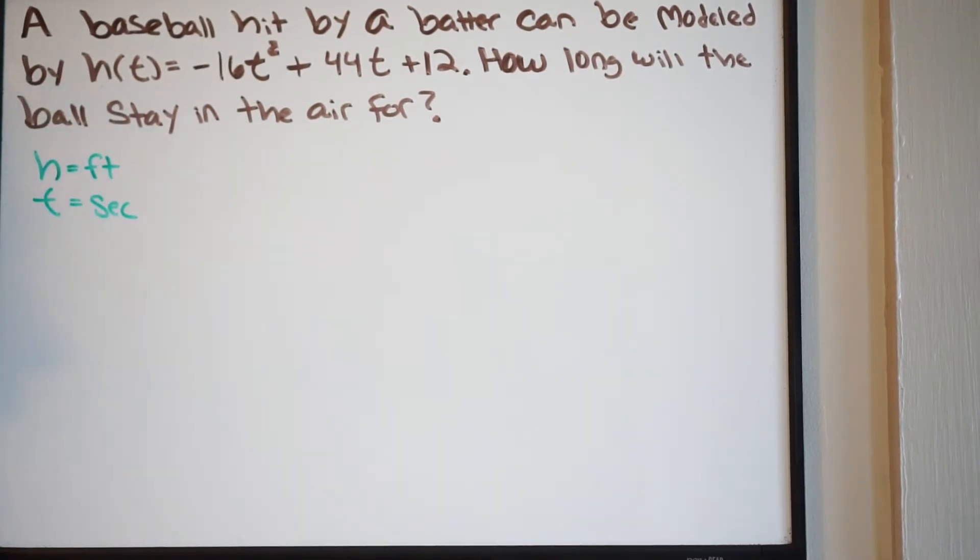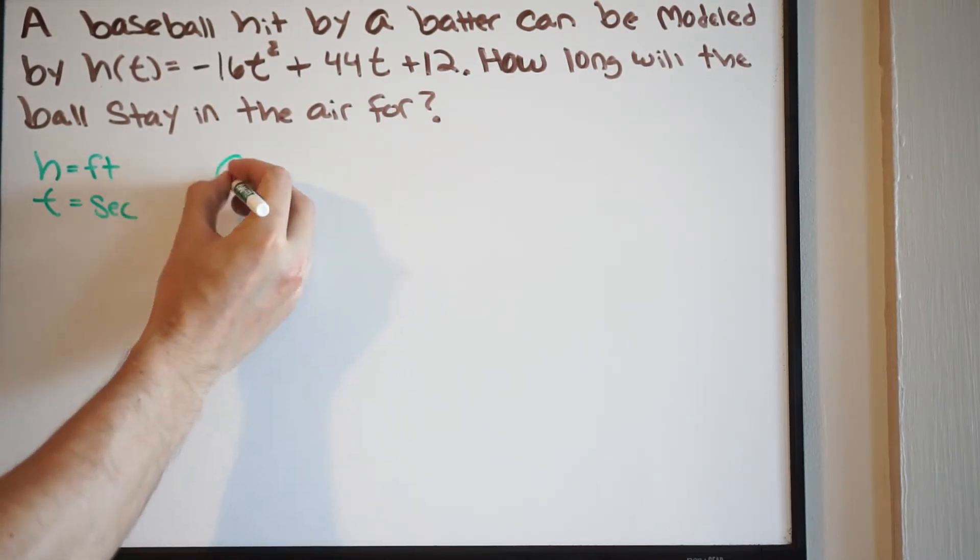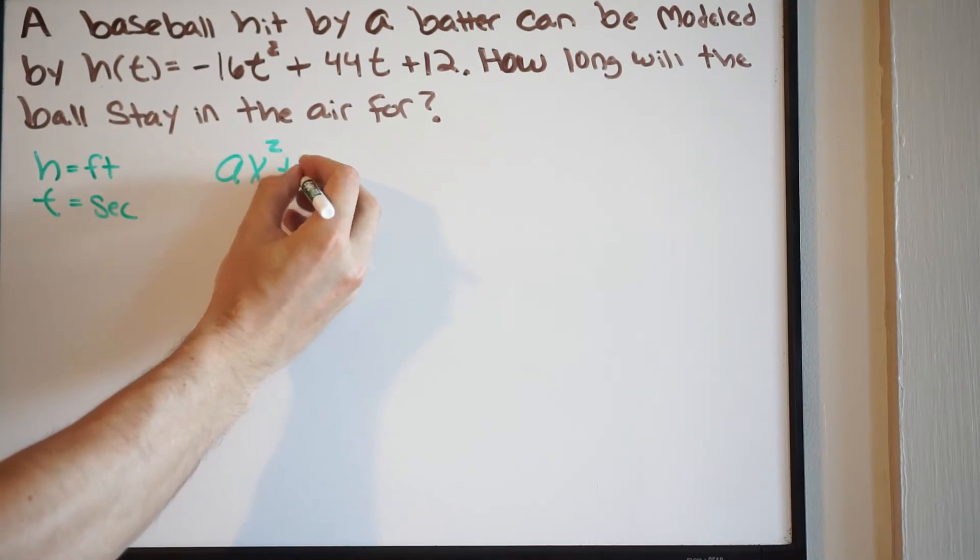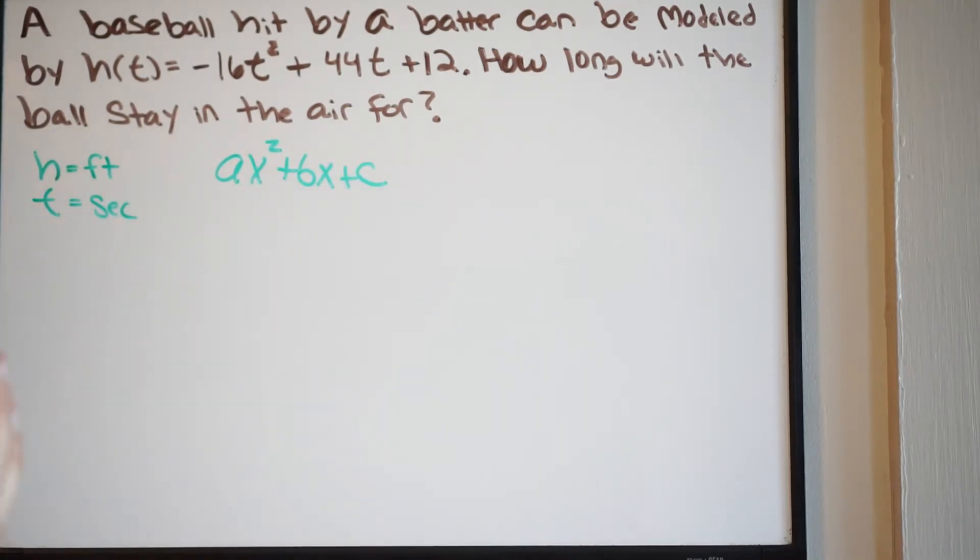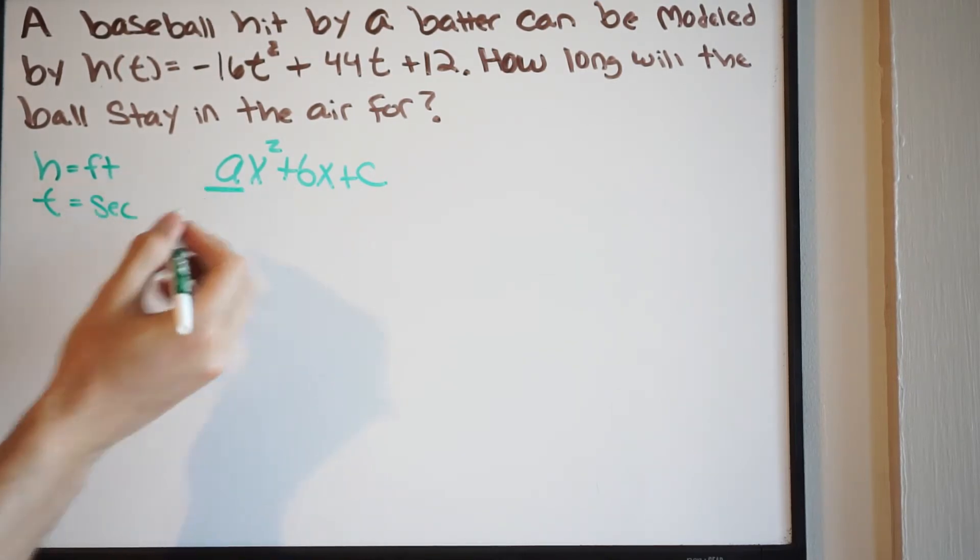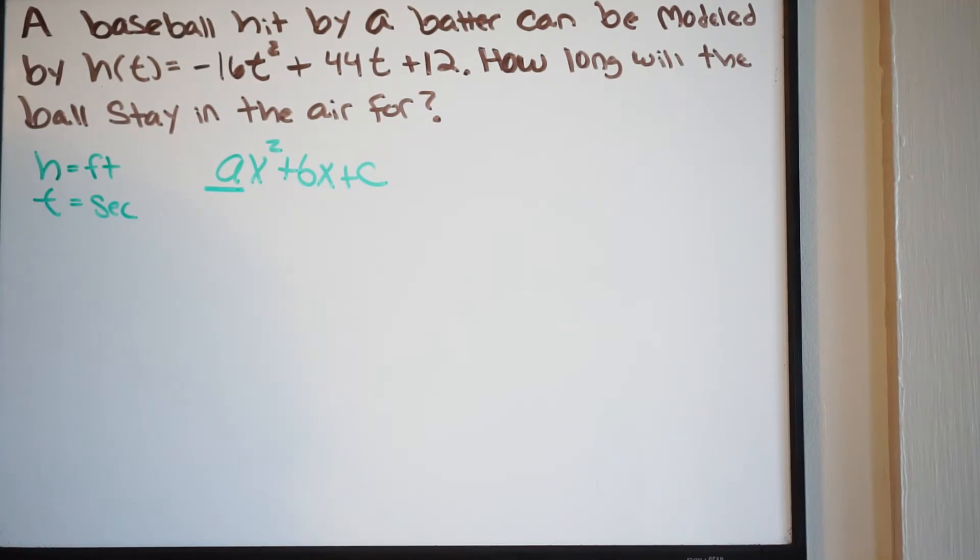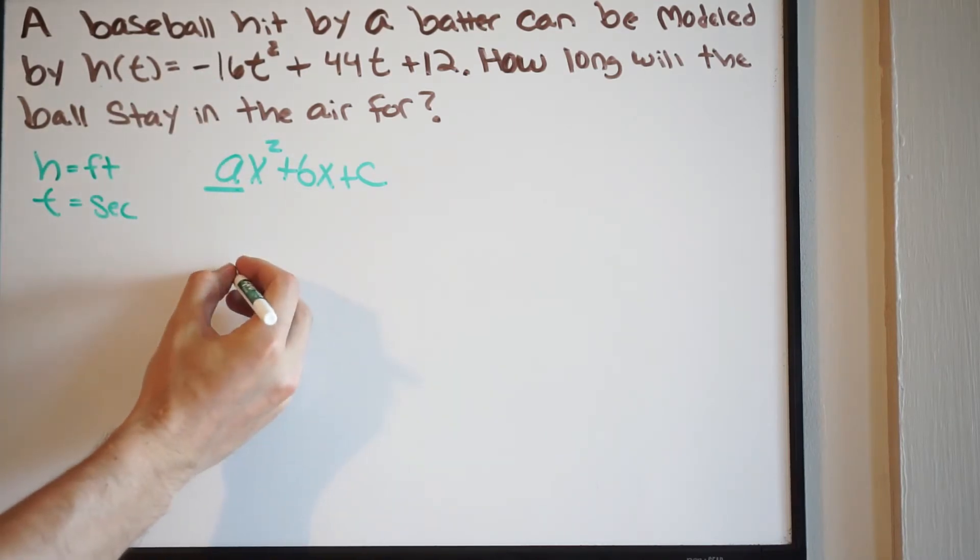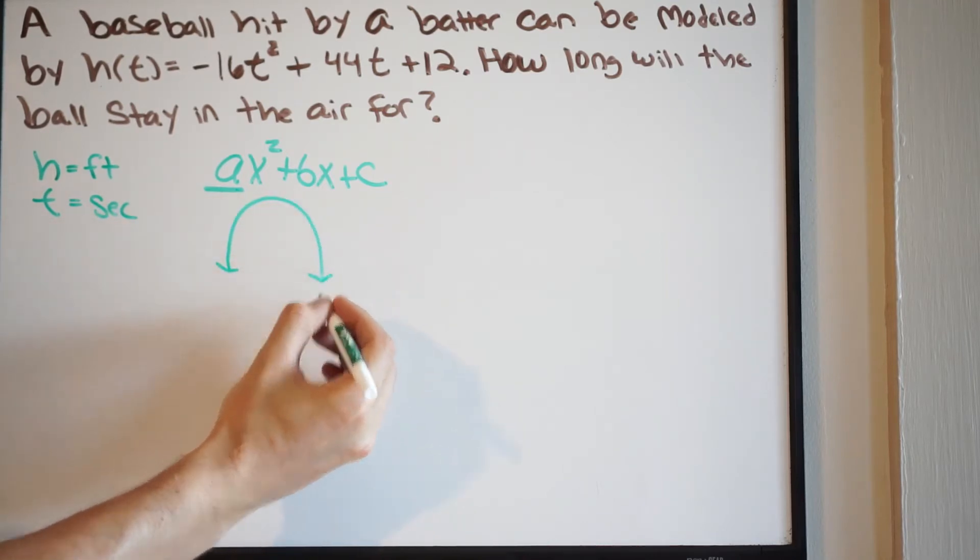So before we go ahead and start this problem, we want to go ahead and draw what our parabola is doing. Meaning, is it opening up or down? And if you recall, a quadratic in standard form can be written the following way. You have ax squared plus bx plus c. And if we want to know if it's opening up or down, we look at our coefficient a. If a is negative, it's opening down. If a is positive, it's opening up. So if I look at the function, I see here that a is negative. Meaning, our parabola is going to be opening down like this.